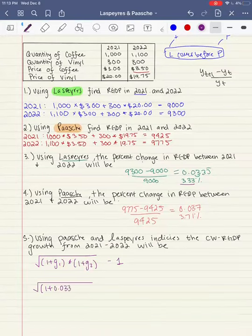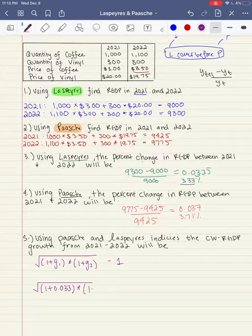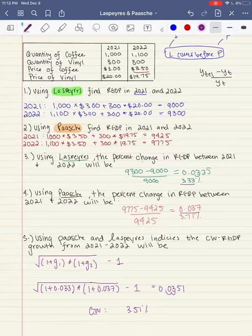So 1 plus 0.033 times 1 plus the growth rate of 2, 0.037, minus 1. And then when we plug this into our calculator, we get 0.0351 or we get 3.51%, which is going to be our chain-weighted real GDP.